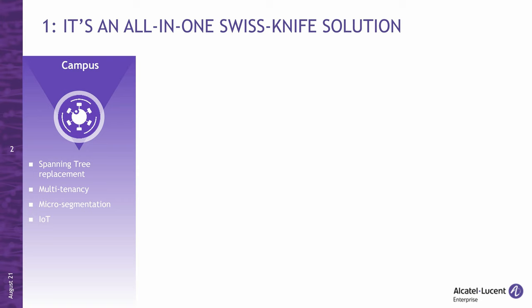Spanning tree is an ancient protocol designed to prevent loops. However, it can be a real source of headaches because spanning tree misconfigurations or errors can result in a complete network meltdown. On top of that, spanning tree is very inefficient and wastes network capacity, resulting in poor performance. SPB came to fix all that with a modern, robust protocol that makes networks stable and performant.